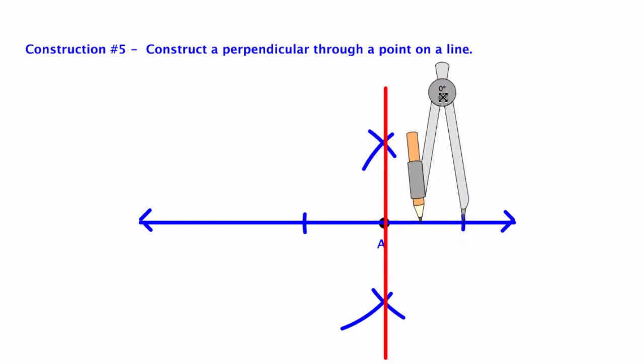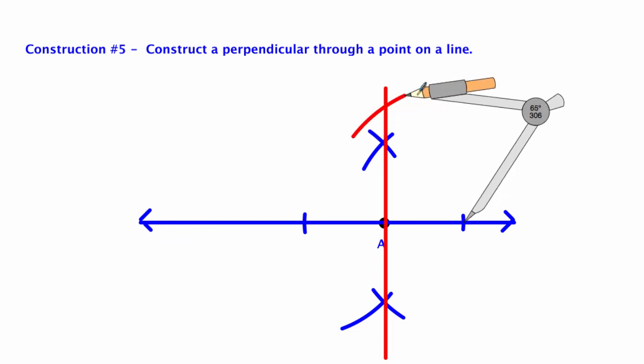If you want to double check, you can open up your compass some more, swing another X above the top, maybe on the bottom, and it should be right on that line.